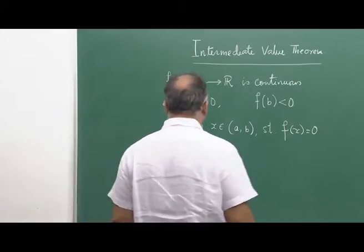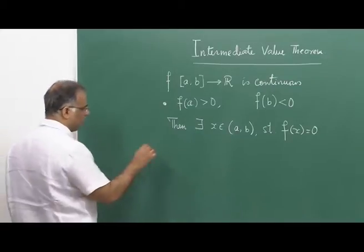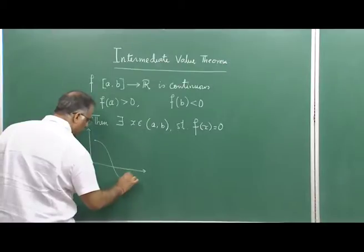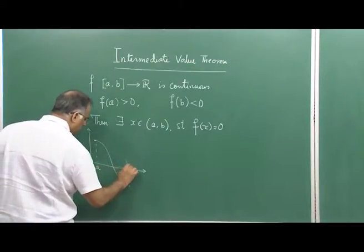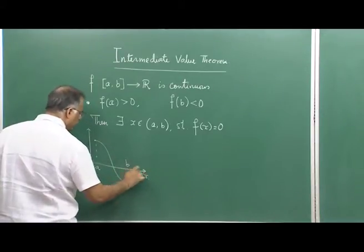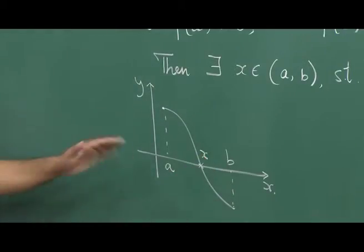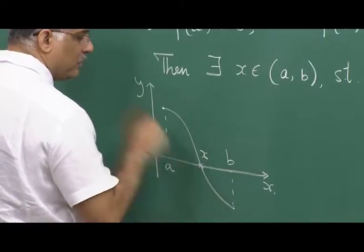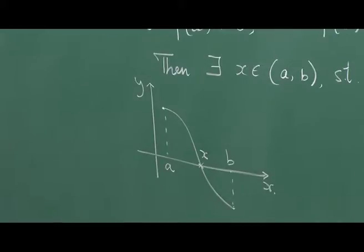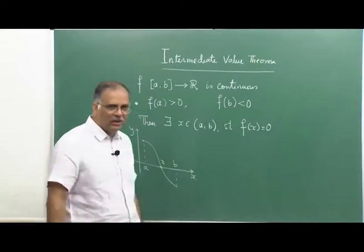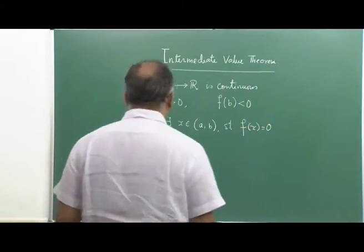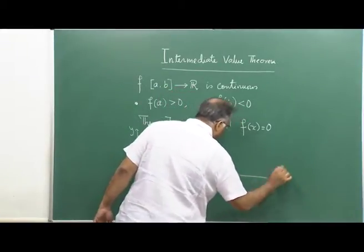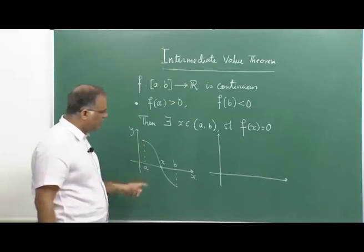Does there exist only one x, or can there be more than one x? Let us draw some pictures to confirm it. For example, if you have a continuous function between a and b, where f(a) is positive and f(b) is negative, here is the point x where it cuts the x-axis. You start from the top of the mountain and you want to go below the river — then you really have to cross the surface of the river once. That is the basic idea: if you travel on the number line from minus 2 to plus 2, you have to cross 0 once.